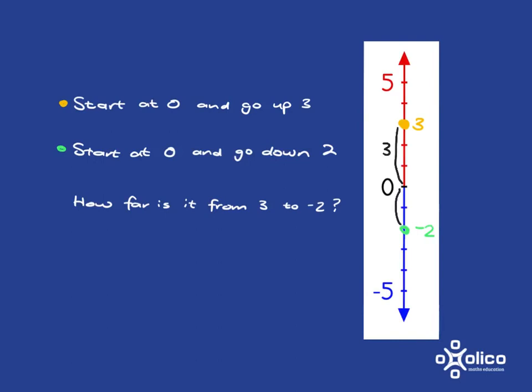and from 0 to negative 2, that's 2 steps, and so in total it is 5 steps from 3 to negative 2 on the number line.